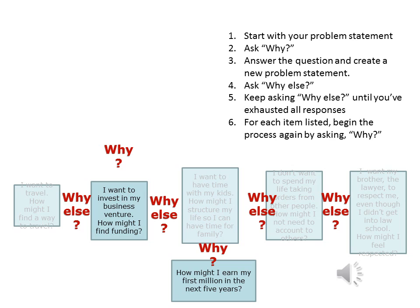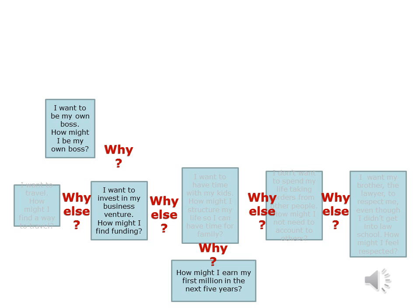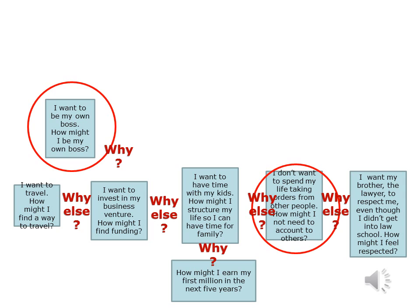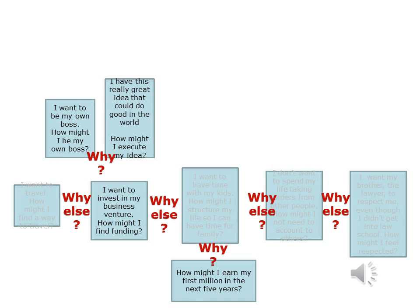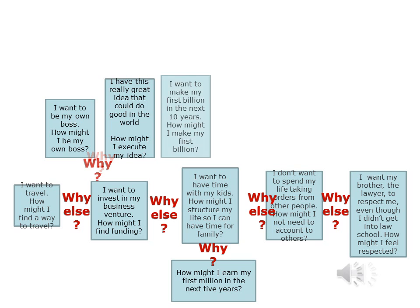Once you've exhausted all the why-elses, you'd ask why again about each of the items listed. For example, you might ask why do I want to solve the problem of finding funding for my business venture? Here you might answer: because I want to be my own boss. And now you can see that a theme might be emerging. Perhaps the fact that you want to be your own boss and don't like taking orders from other people is particularly important. You wouldn't jump to that conclusion at this point, but you might take note of the recurrence. You might want to invest in your own venture because you have a really great idea that could do good in the world. Why else? Perhaps you want to make your first billion in the next ten years. You can see how this can continue for quite a while, and given that this is a divergent exercise, it should continue for quite a while, until all possible options are explored.